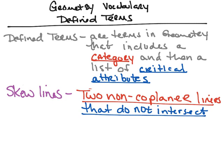The next defined term is skew lines. These are two non-co-planar lines that do not intersect. The category is two non-co-planar lines, and do not intersect is the critical attribute. To demonstrate: if I have one plane with a line on it, and a different plane with a line on it as well, these two lines would not intersect each other. Because they're on different planes, even if I were to extend the lines, they would not intersect. Therefore, we call these skew lines — two non-co-planar lines that do not intersect.